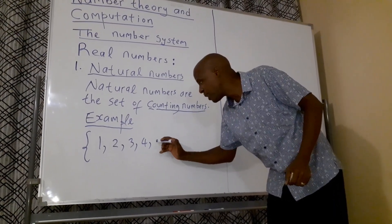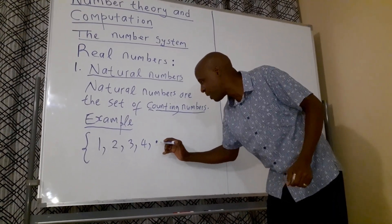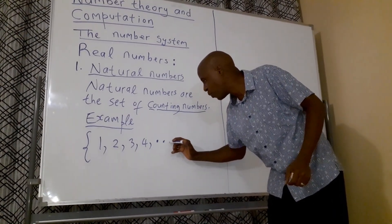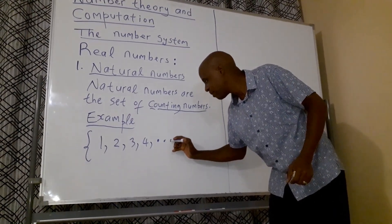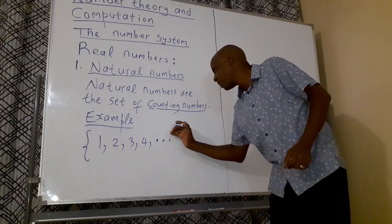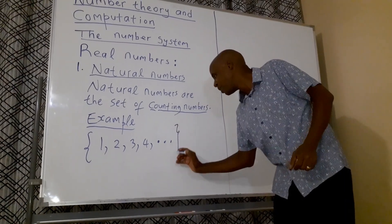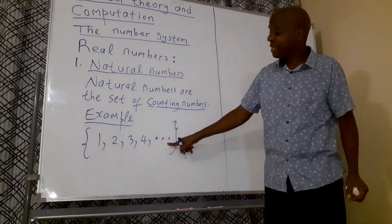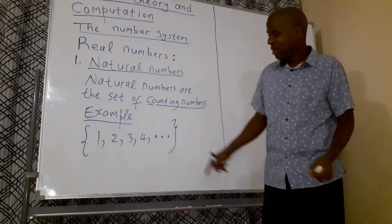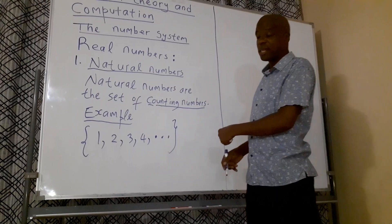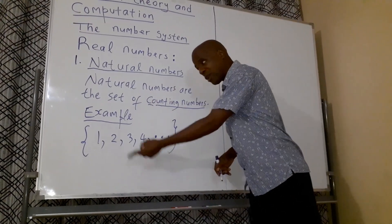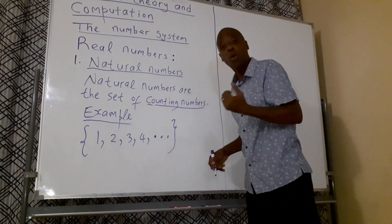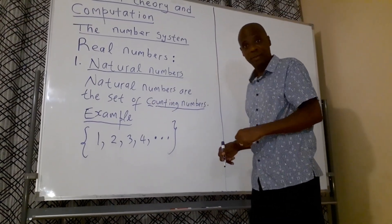And because it is infinite, we write three dots to show that it doesn't stop — it goes up to what is called infinity. So this is called a set of Natural Numbers, which are counting numbers.